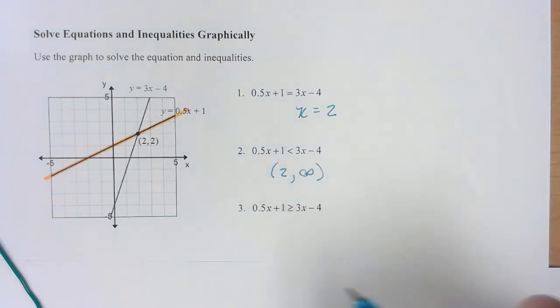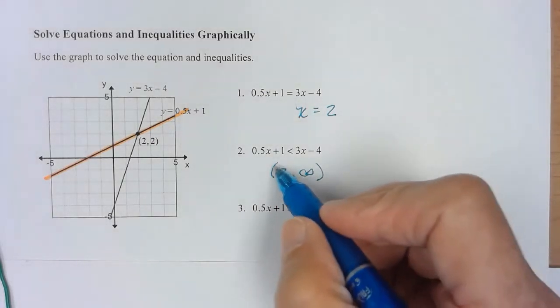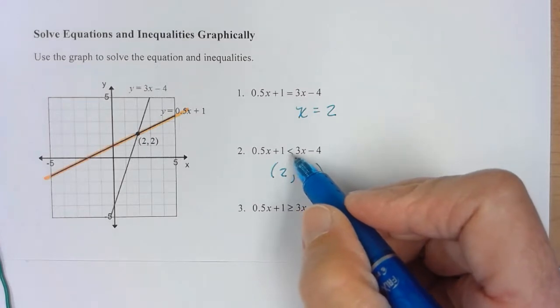With these being straight lines, they're not going to turn, so it's going to be true all the way to positive infinity. Notice I use the parentheses because this is a less than.